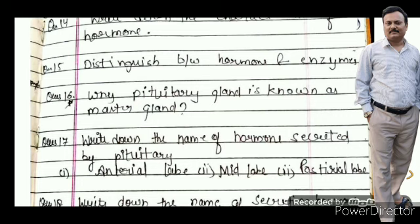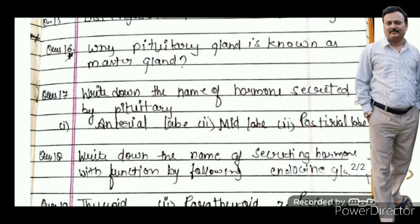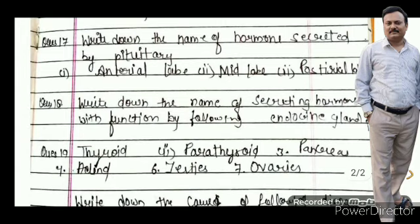This is also a very good question: why is the pituitary gland called the master gland — name the hormones released from it. Actually, the pituitary has three lobes. Question number 17: write down the names of hormones secreted by the pituitary — which hormones come from the anterior lobe, which from the middle lobe, and which from the posterior lobe.